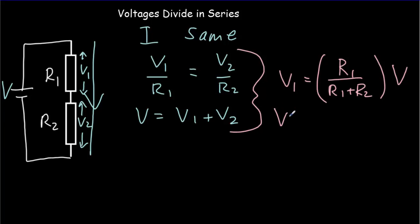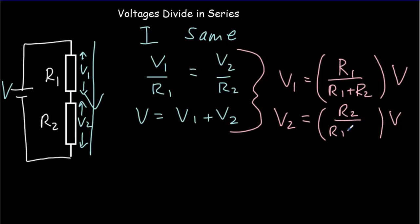Similarly, V2 is going to equal a certain fraction of the battery voltage — it's going to equal R2 divided by R1 plus R2.